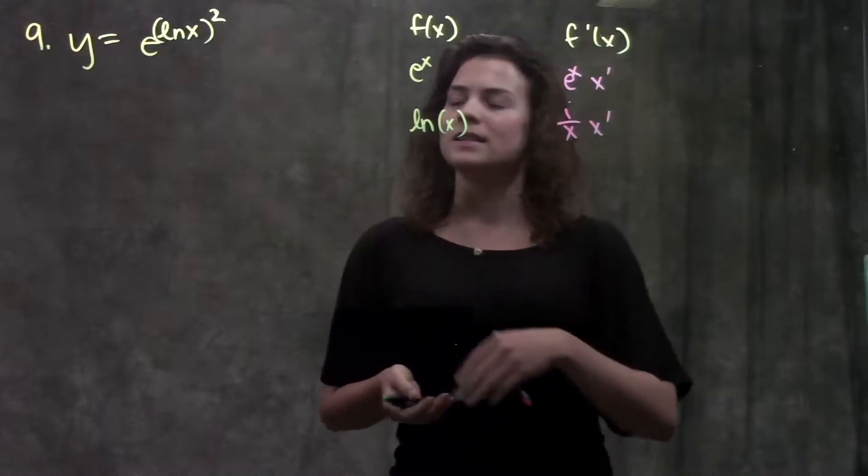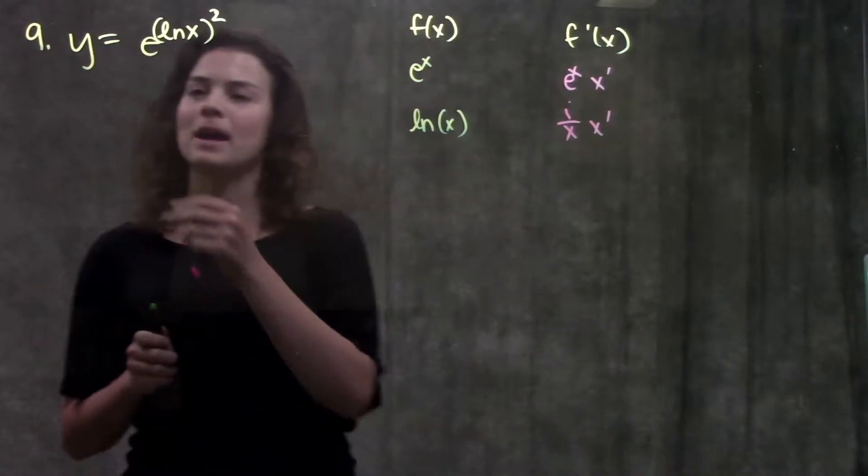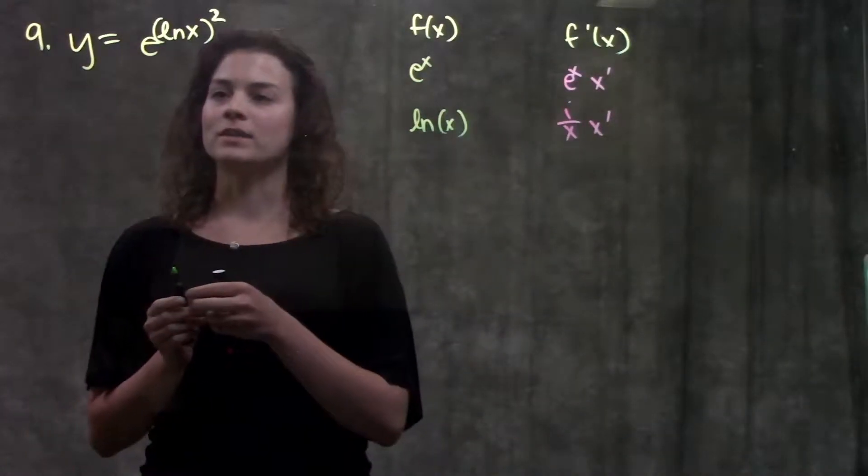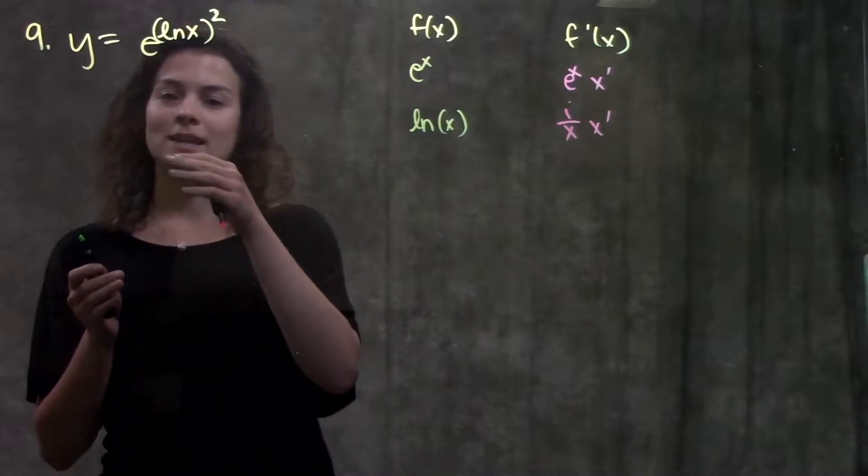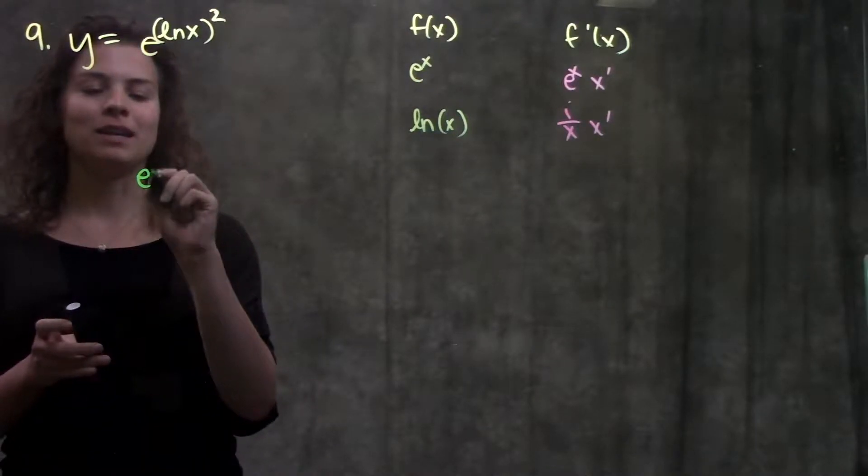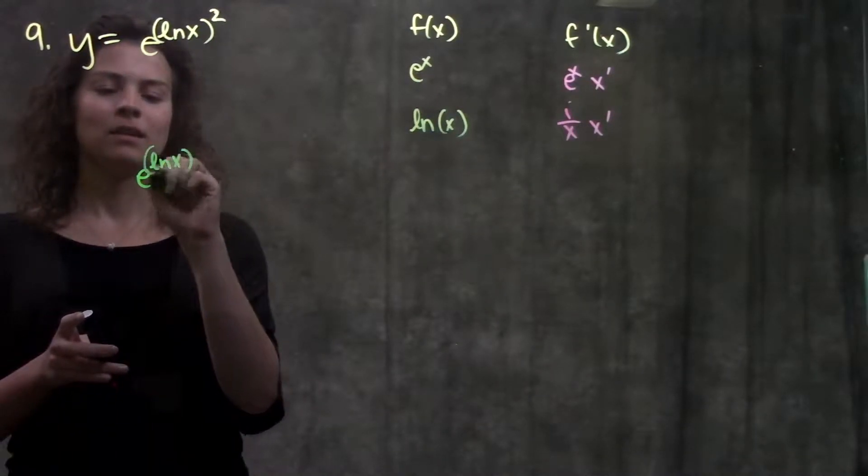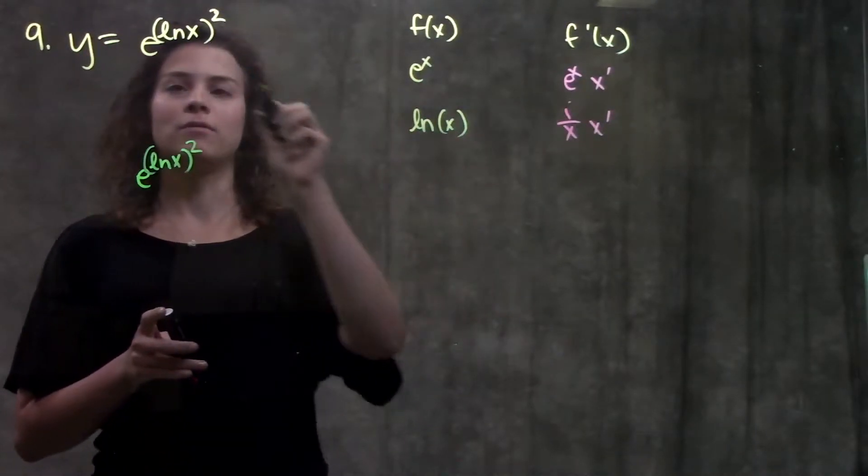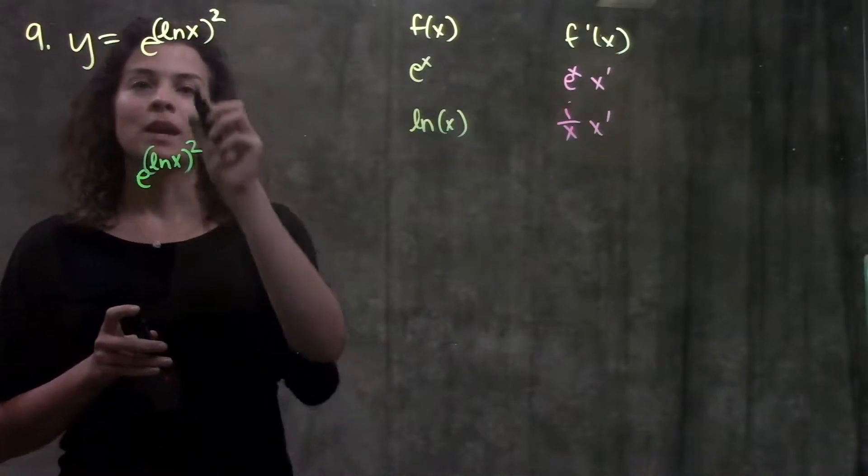Let's apply these rules to number 9 in the book. Number 9 gives us this function. We're going to start with the outermost function, which is e to the something. The derivative of e to the something is e to that same something times the derivative of that exponent.